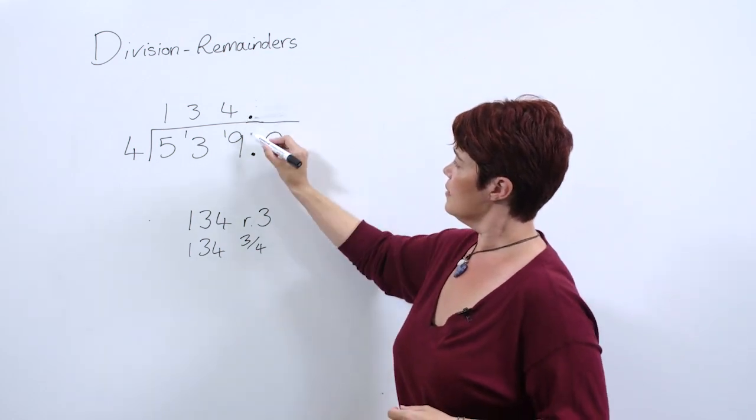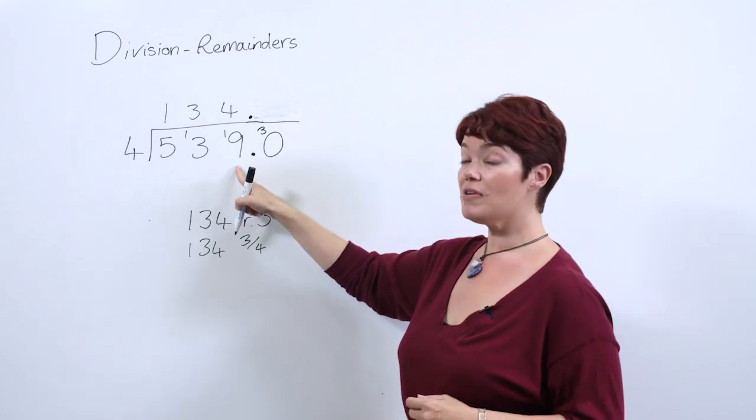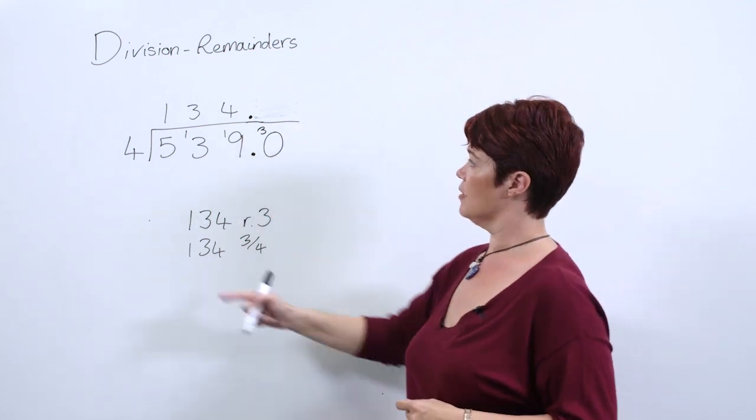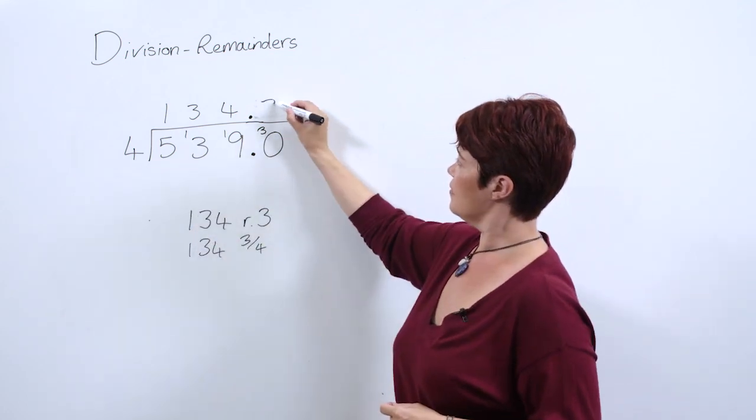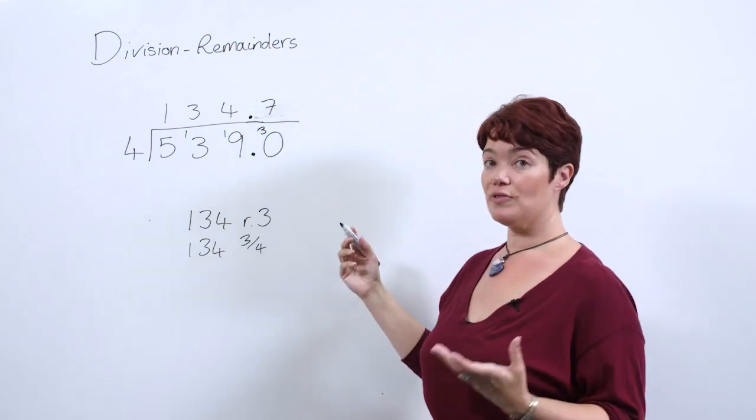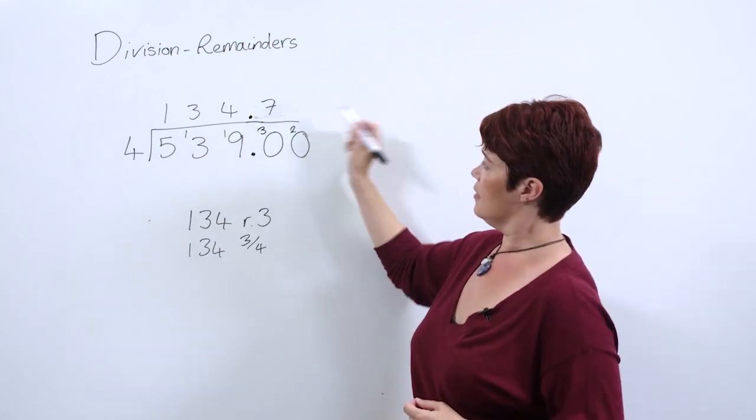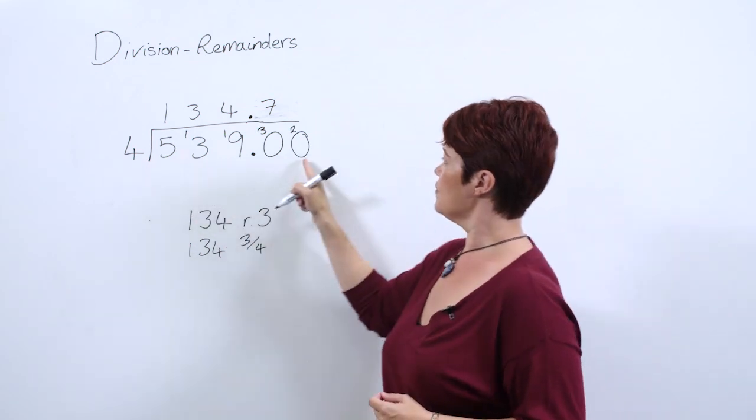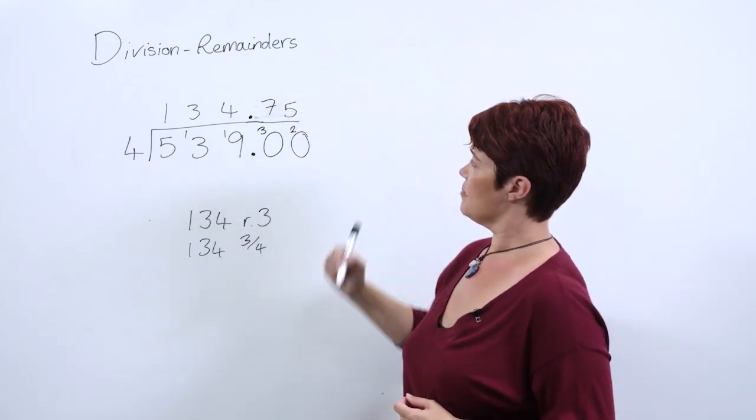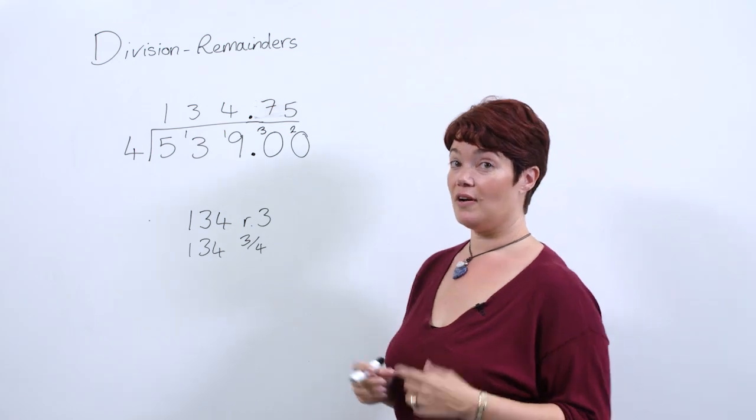Using our remainder, our remainder becomes from 3 ones 30 tenths. So 4 into 30 goes 7 times. We have a remainder of 2. Another placeholder and our 2 goes there. 4 into 20 goes 5 times and there's our decimal.